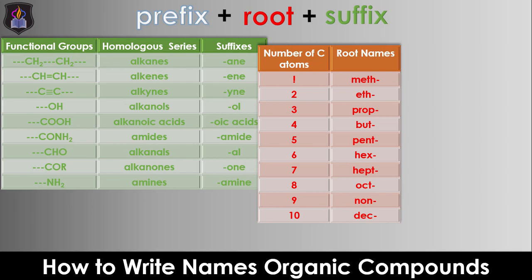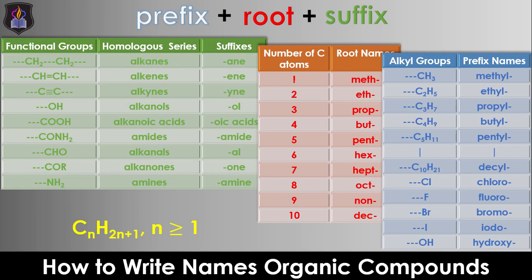The prefix is obtained from the substituents, which are majorly alkyl groups. A substituent is any other atom or carbon-containing group of atoms which is not part of the parent chain. Alkyls are groups of atoms with the general molecular formula CnH(2n+1), where n is greater than or equal to one. The list of alkyls and their names are seen on the screen, and these names make up the prefixes. Other atoms or groups with their corresponding prefixes include: chloro for chlorine, fluoro for fluorine, iodo for iodine, and hydroxyl for OH.